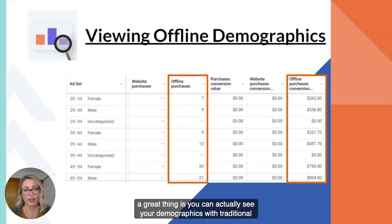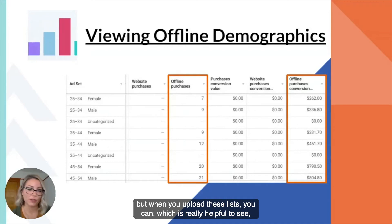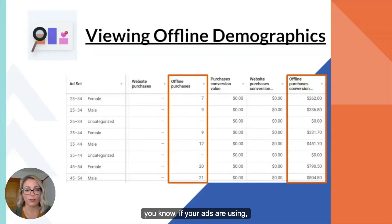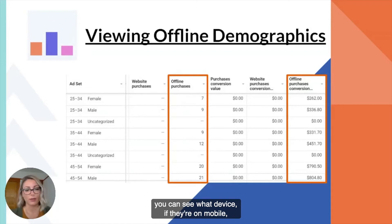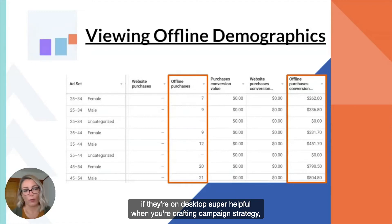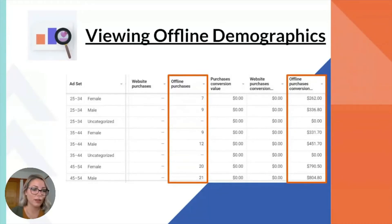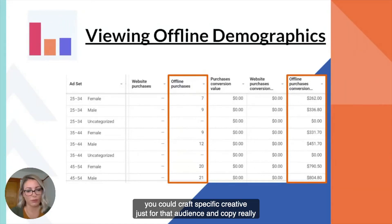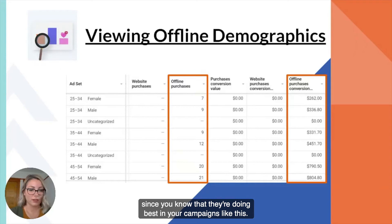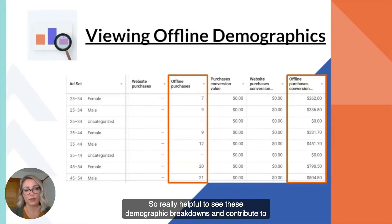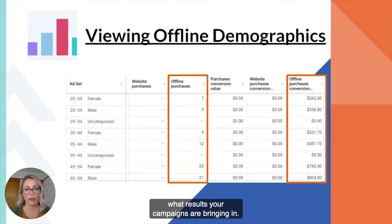A great thing is you can actually see your demographics. With traditional tracking, because of these iOS updates, we can't see the demographic breakdowns, but when you upload these lists, you can. It's really helpful to see if your ads are resonating with certain audiences and regions — you can see by state, by placement, by device, whether they're on mobile or desktop. This is super helpful when crafting campaign strategy and creative. For example, if a majority of your ads resonate on Instagram stories with females aged 45 to 54, you can craft specific creative and copy just for that audience, really targeting and speaking to them since you know they're performing best.